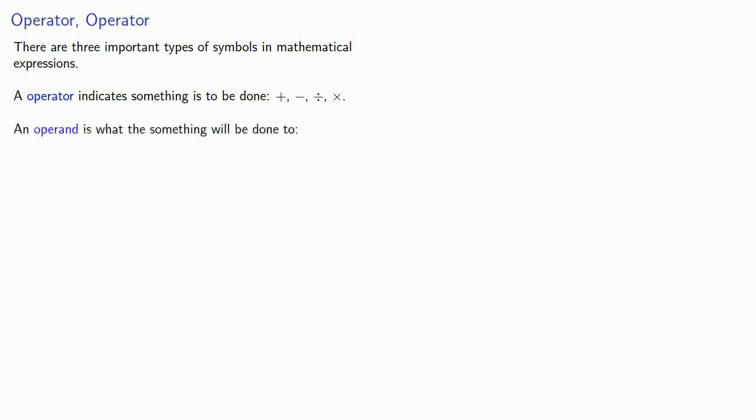An operand is what the something will be done to — things like the numbers 5, 17, 35, and so on. And finally, a relational symbol indicates a relationship between two expressions. The most common relational symbol is equals.